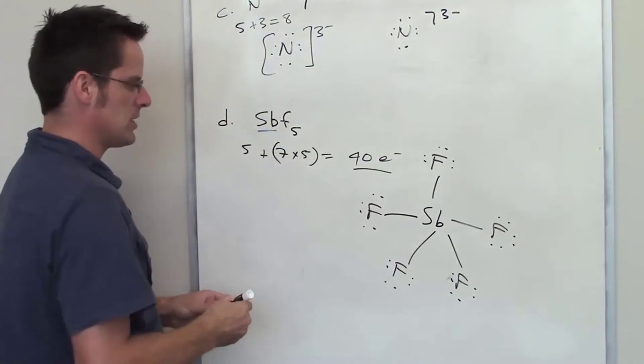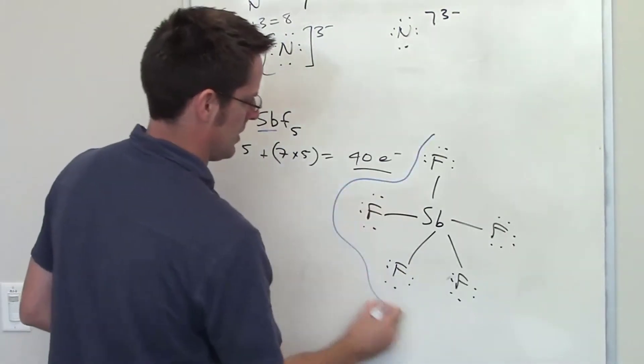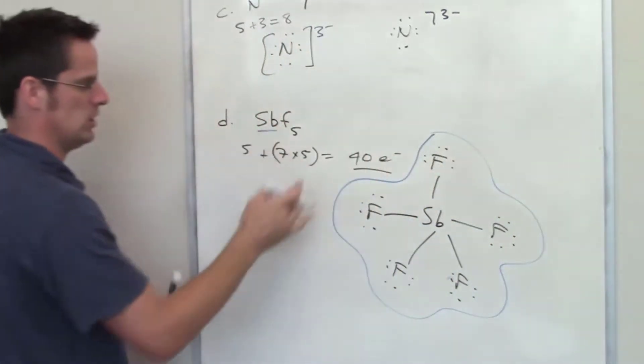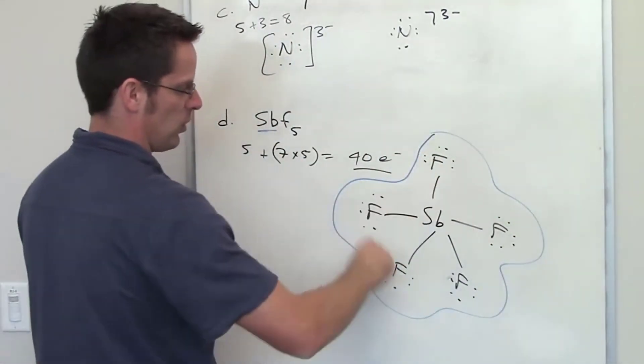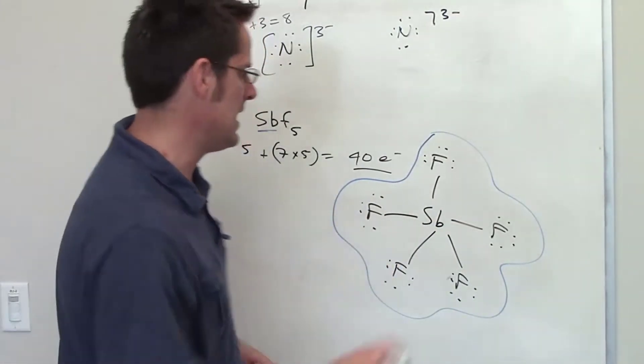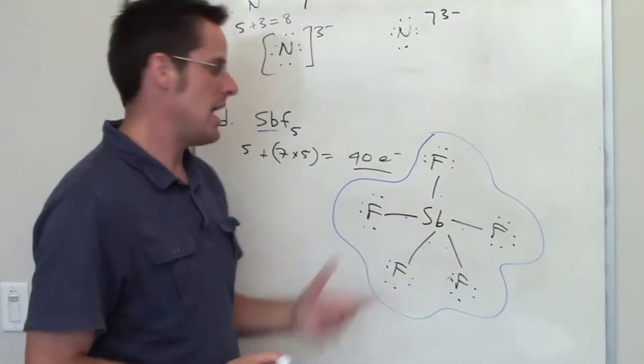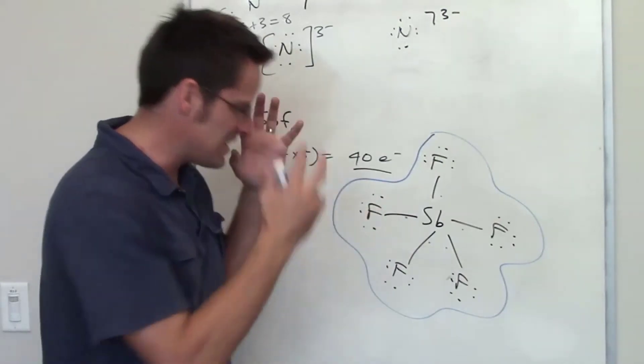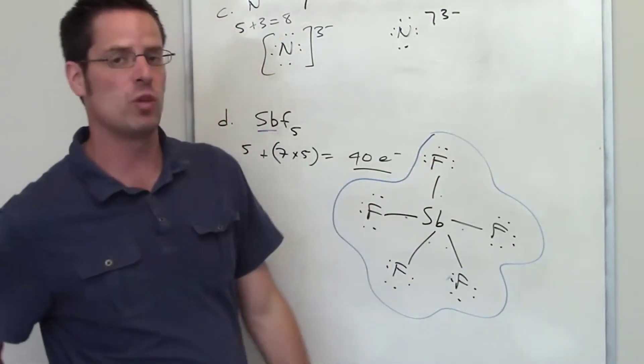So that Lewis structure right there, try and circle it so that it's kept separate from my gibberish over here, has full octets on all the fluorine atoms. You'll notice, however, that this antimony right here does not have an octet. It has 2, 4, 6, 8, 10 electrons around it. That is the total number of electrons in the system, and that is the only way I can put all these atoms together, unless they start violating octet rules with the fluorines.